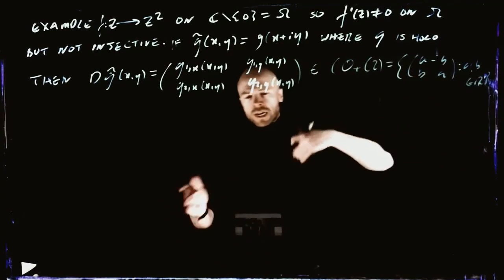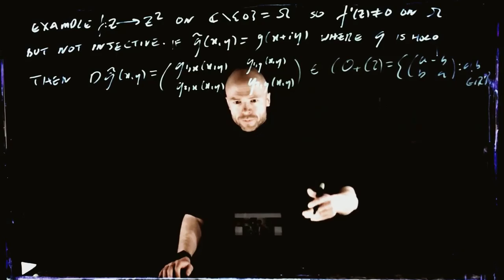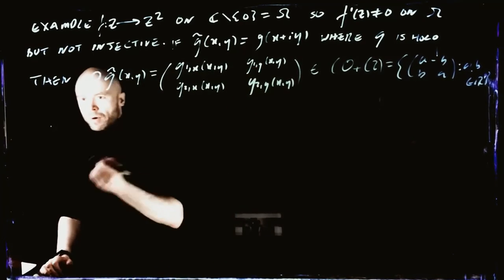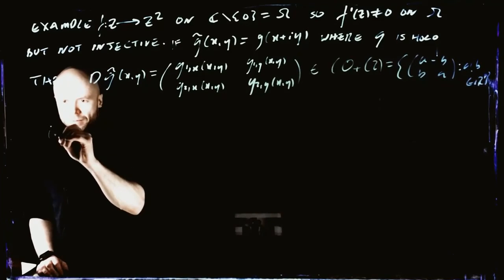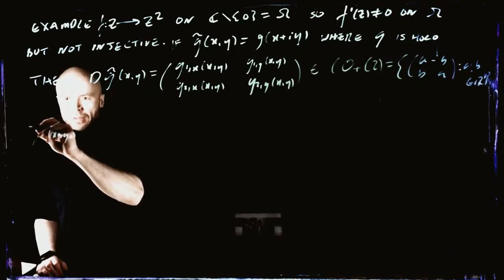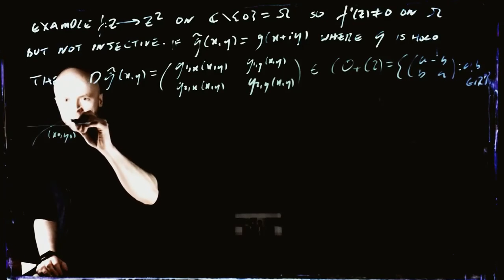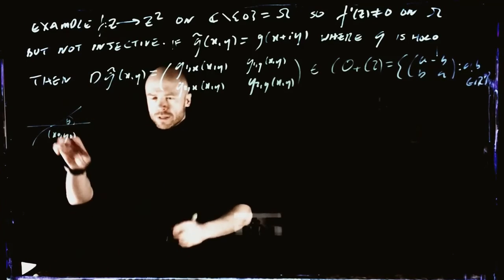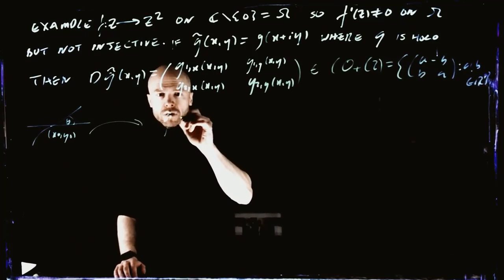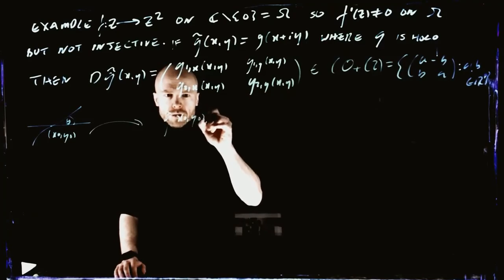These matrices are just lambda times a rotation. If we look on a very small scale in particular, so if this is some point here where we're taking the derivative (x0, y0), we have, say, a couple of lines crossing at some angle theta. Then what's this picture when we map it? It's going to be mapped around G tilde of (x0, y0).